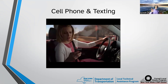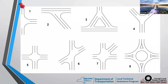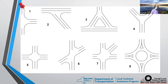Before we get into signs and markings, I want to spend a little time talking about the geometry of intersections. There's all kinds of interesting geometry involved. The one we all think of is the four-way intersection, with or without traffic control — that's the most common. But you could also have a T-intersection, which is fairly common.